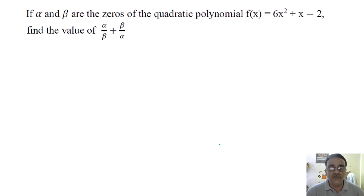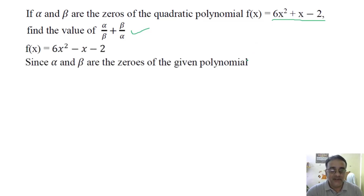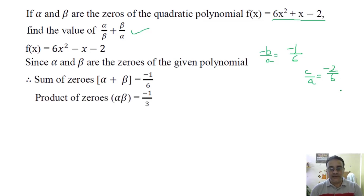If α and β are zeros of 6x² + x − 2, find α/β + β/α. First, α + β = −b/a = −1/6, and αβ = c/a = −2/6 = −1/3.